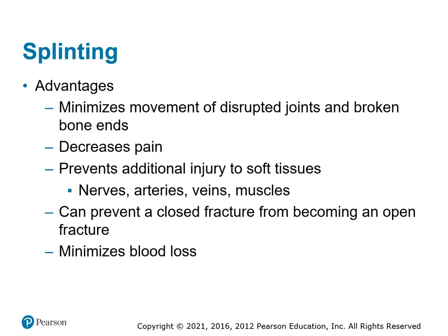What splinting does for us is it makes the joints and bones stop moving. It helps the patient with pain, helps the patient with swelling. It prevents any further injuries to the interior body parts — the nerves, the arteries, the vessels, the muscles. Hopefully it prevents a closed fracture from becoming an open fracture, hopefully it prevents a partial amputation from becoming a full amputation, and it's supposed to slow the blood loss, which helps us there.